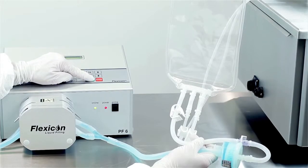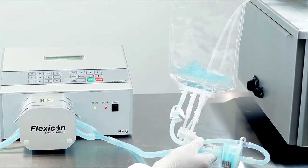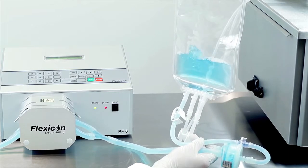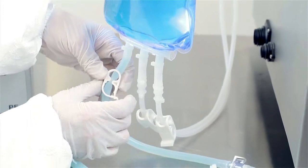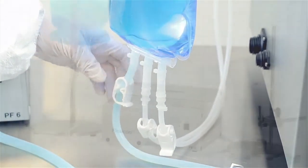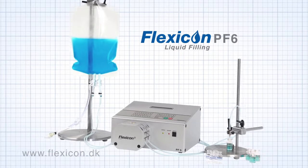The PF6 has been optimized to work with AccuSyl Platinum cured silicone tubing. This type of tubing delivers accurate dispensing and is an important part of the total filling solution, ensuring that costly overfilling is prevented.